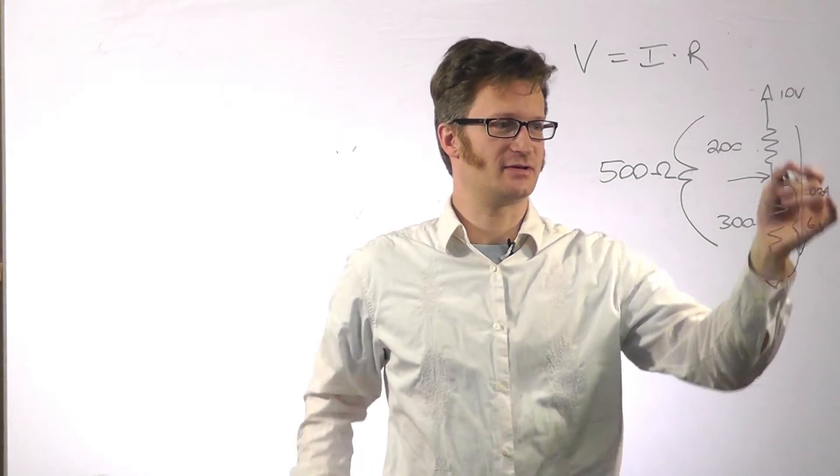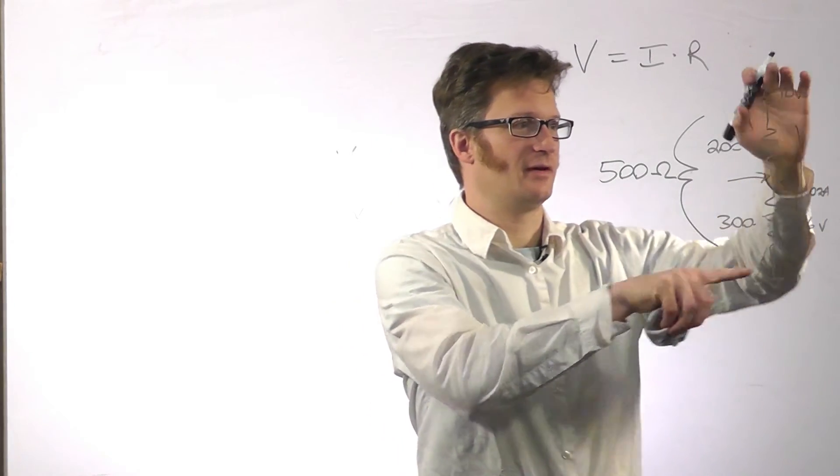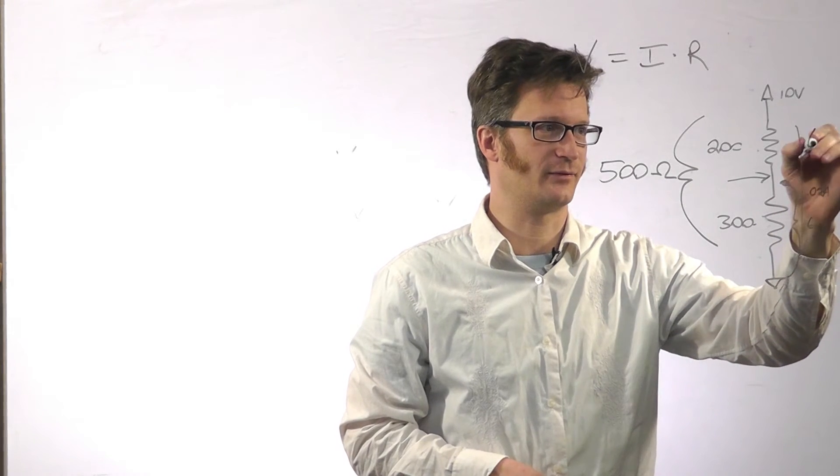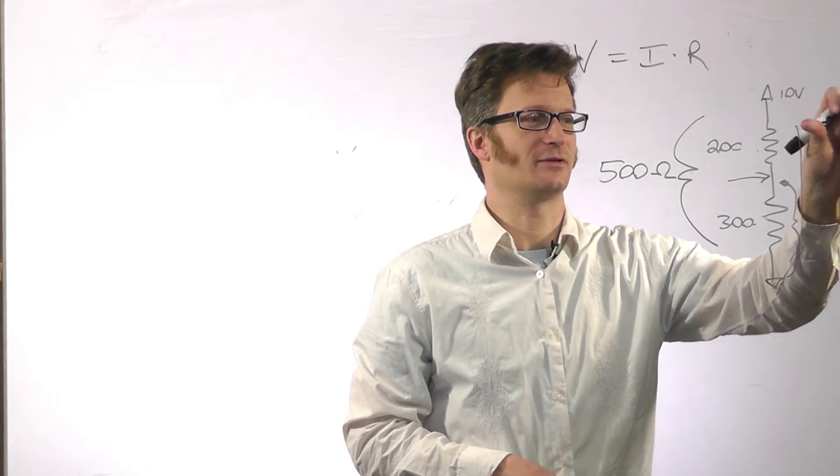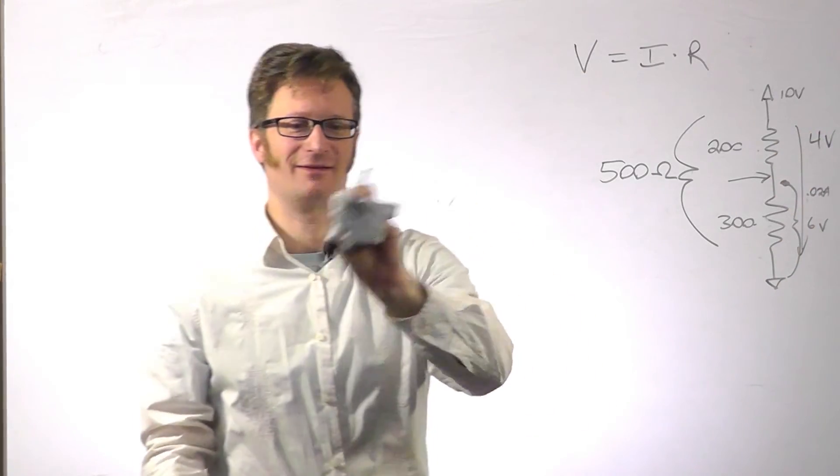And we don't have to do any multiplication or any sort of calculation like this to figure out what this voltage is here. Because the total voltage across these two points is 10 volts. So to get this voltage here, it's 10 minus 6. So this is 4 volts.